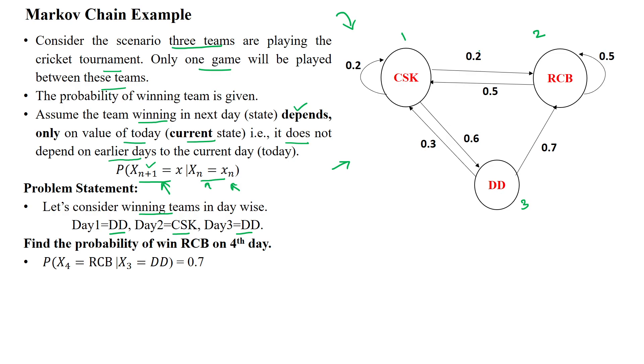Here the state transition value is also given when it is moving from one state to another state. When the CSK is winning by itself on the next day is 0.2. First day is winning the CSK and the next day for winning the RCB is 0.2. Like that we can use the state transition values to identify which team will win the next game. Here for fourth day we have to identify.